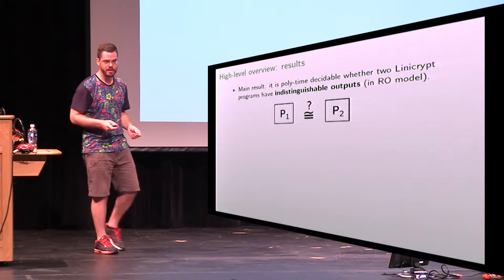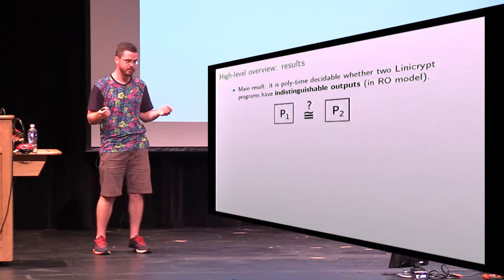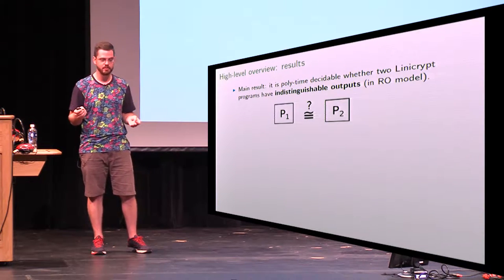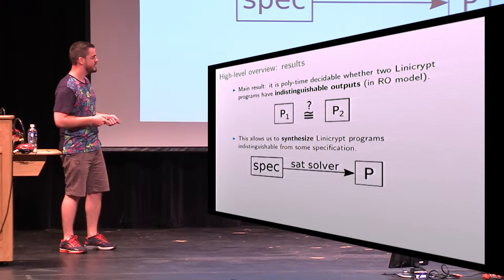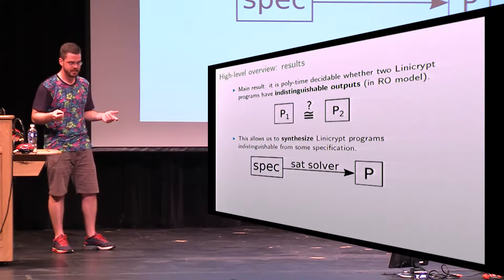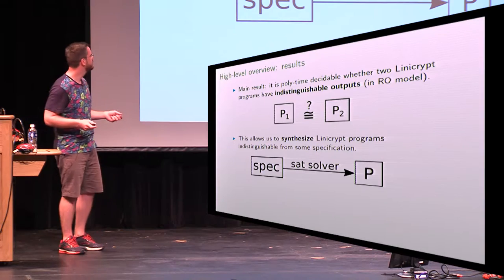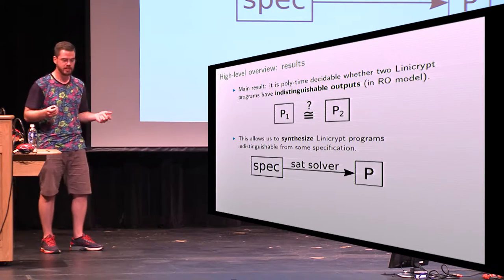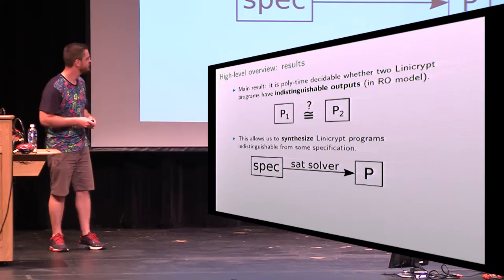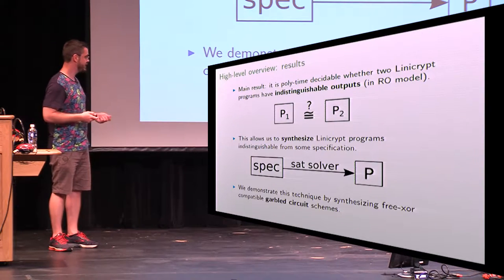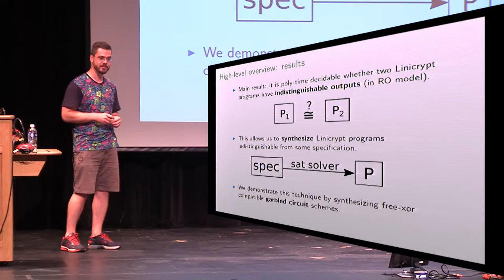Our main result is that we show for any two LinnyCrypt programs, we can tell whether they're indistinguishable in polynomial time. This lets us synthesize — automatically generate — LinnyCrypt programs that are indistinguishable from some specification. We demonstrate this technique by synthesizing FreeXOR-compatible garbled schemes.